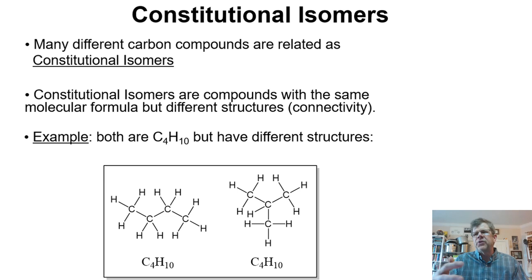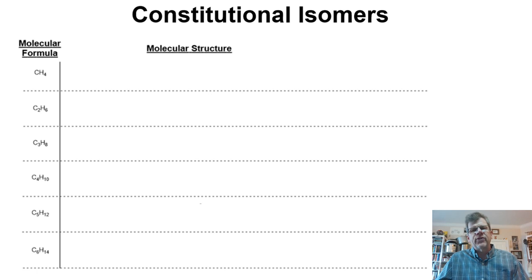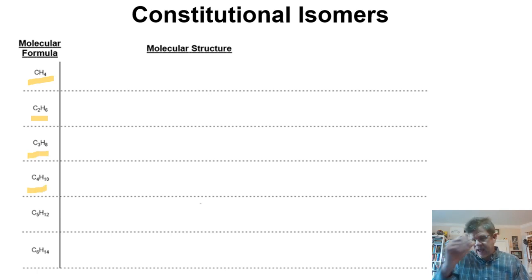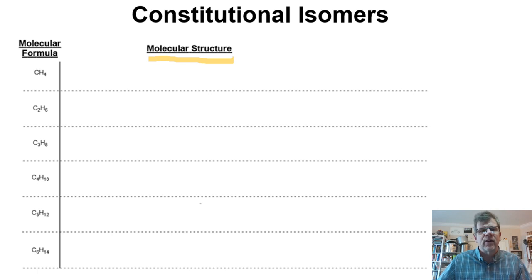While these are different compounds, they are related as constitutional isomers. Let's build up carbon compounds from one carbon up to six carbons and see where constitutional isomers come into play. On the left side, we have the molecular formulas — CH4, C2H6, C3H8, and so on — increasing in carbon number, with the appropriate number of hydrogens to satisfy the 2n+2 rule. In organic chemistry, we don't focus heavily on molecular formulas; we go toward molecular structure and the actual carbon connectivities.